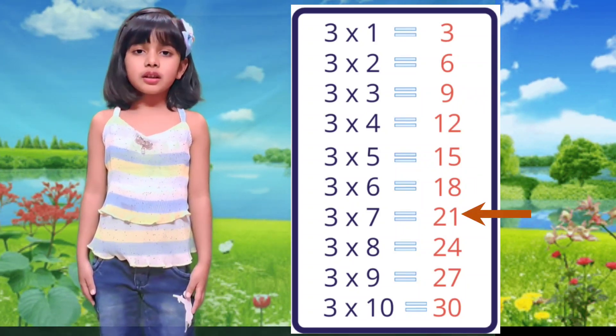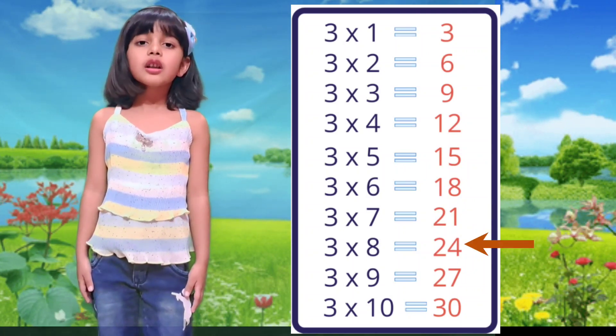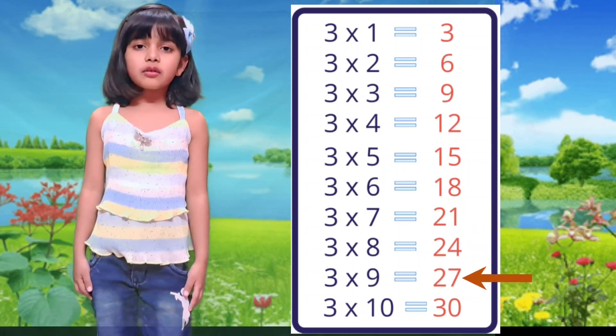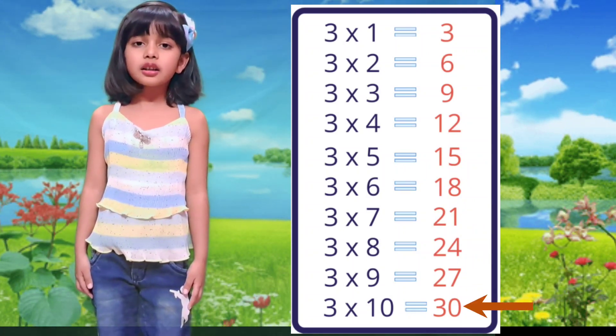3×7 is 21, 3×8 is 24, 3×9 is 27, 3×10 is 30.